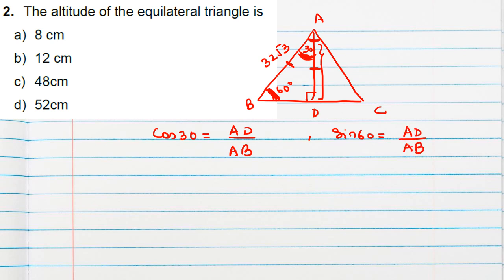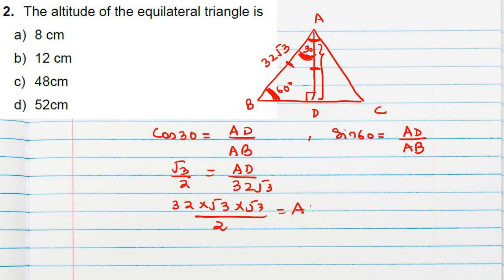Using cos 30° = AD / AB: cos 30° = √3/2, AB = 32√3. Rearranging: AD = (√3/2) × 32√3 = (3/2) × 32 = 48 cm. So the altitude is 48 cm, which is option C.